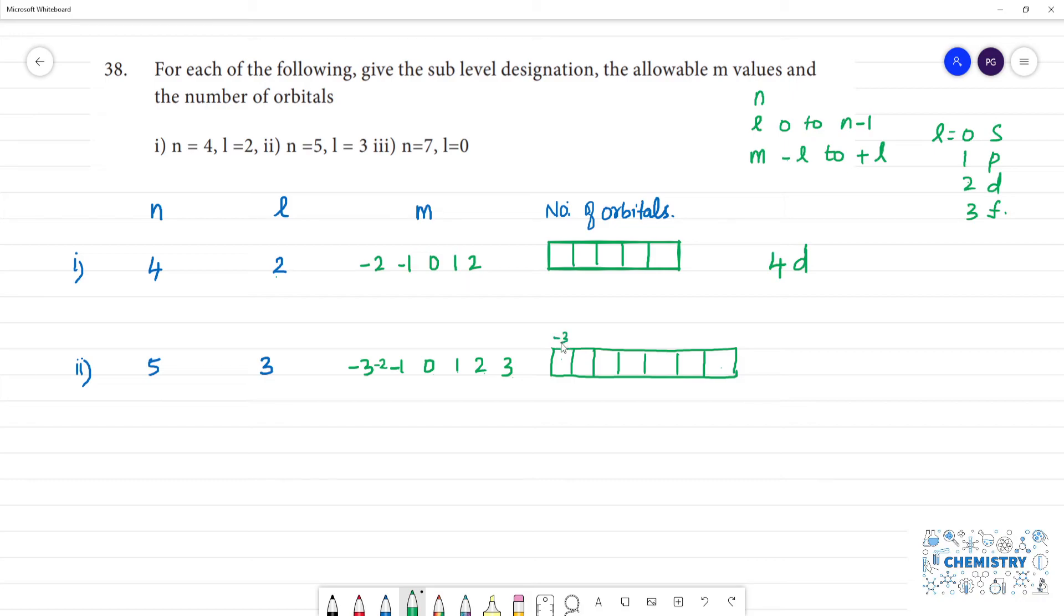So the designation: this is minus 3, minus 2, minus 1, 0, 1, 2, 3. Now, the sub-level designation is 5, l is 3, it is 5f.